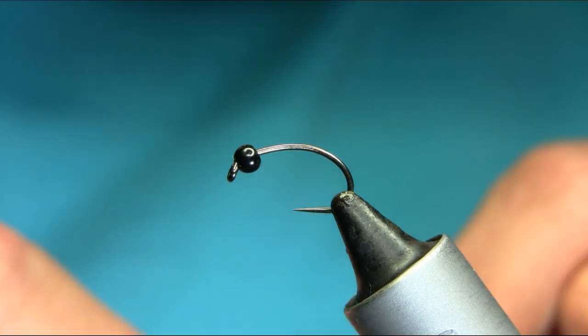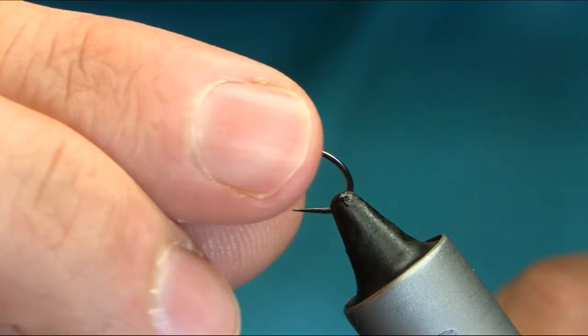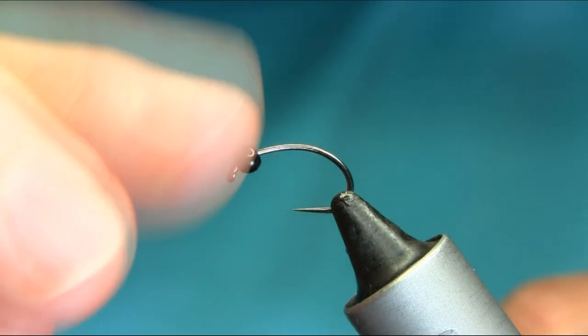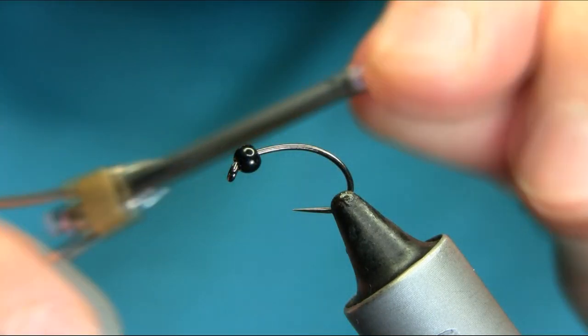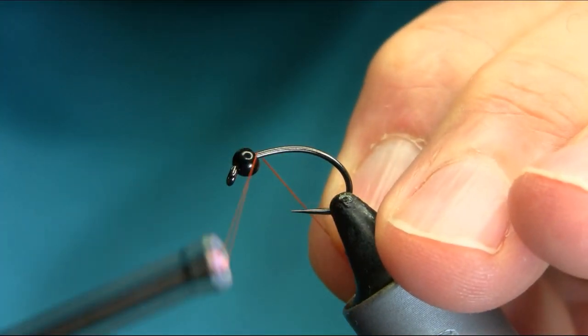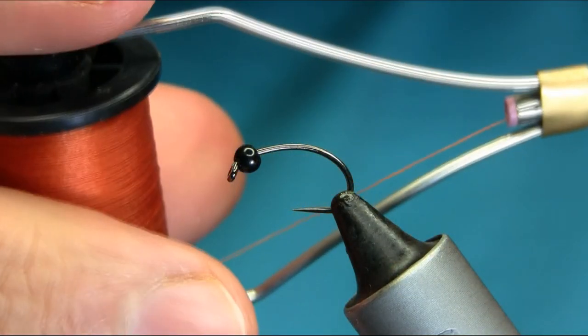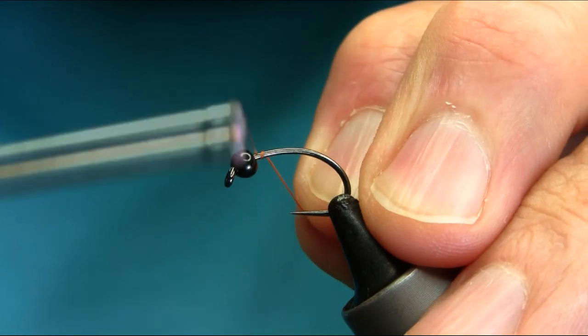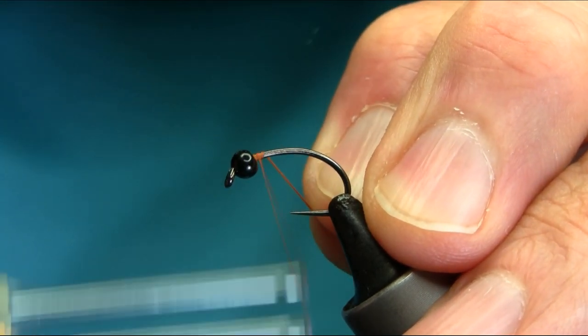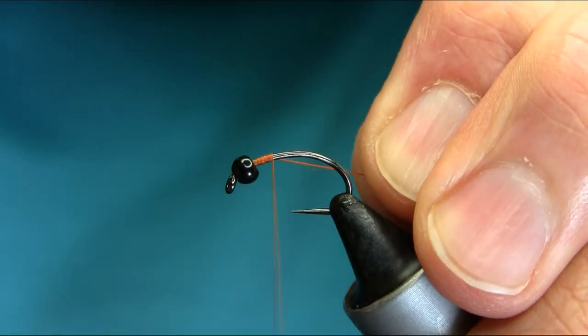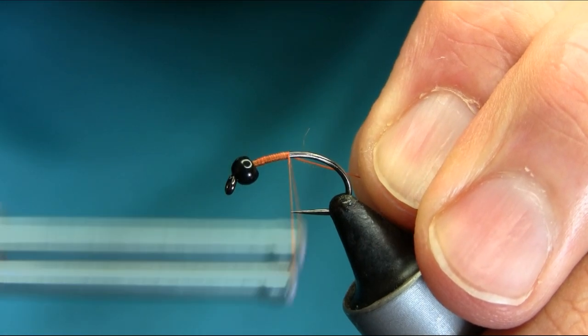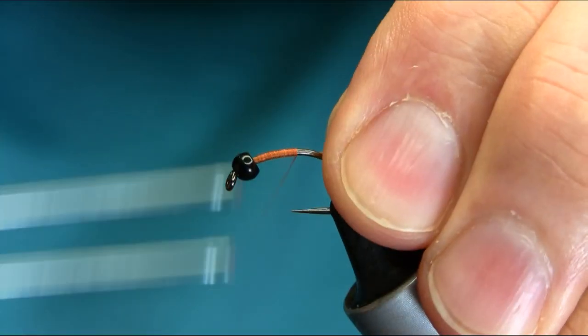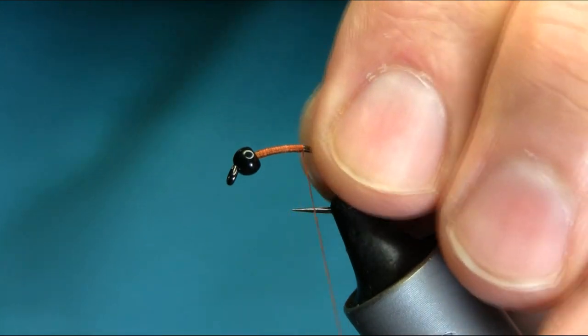Hello everyone, this is a size 10 Grubhawk and the bead is 3.5mm tungsten. Just start below the eye. The thread I'm using is rusty brown and I'll explain all the materials, so just use touch and turn here. Simple pattern to tie.